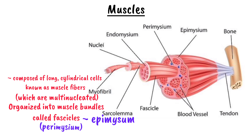Inside each muscle fiber are myofibrils, which contain myofilaments. These filaments are composed of two main proteins: actin, which are the thin filaments, and myosin, which are the thick filaments. The interaction between actin and myosin within structures called sarcomeres allows skeletal muscles to contract, giving them a striated or striped appearance.